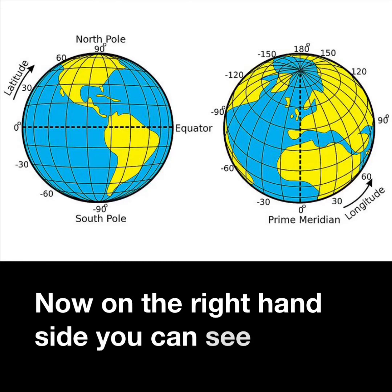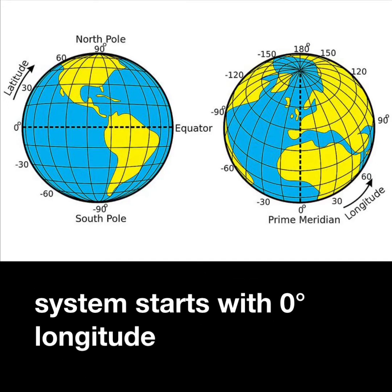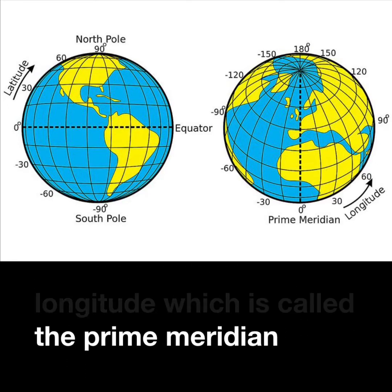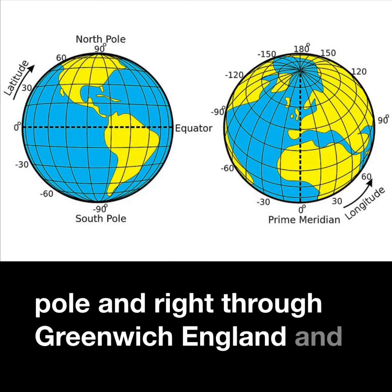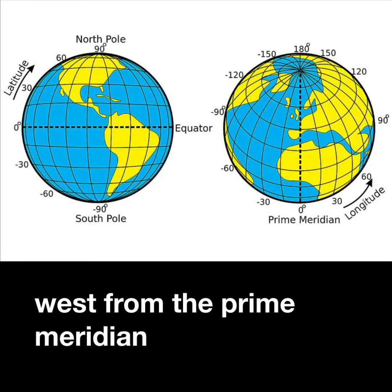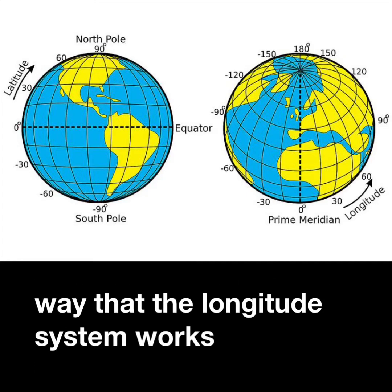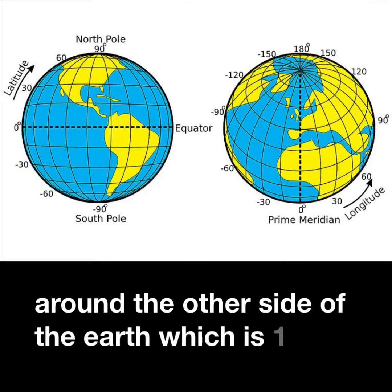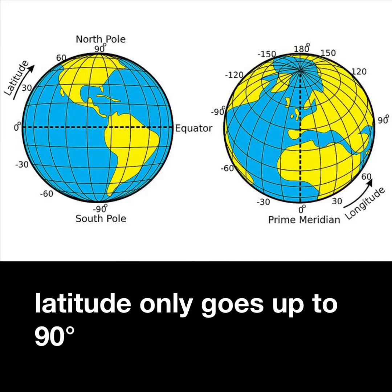On the right-hand side you can see the longitude system. It starts with zero degrees longitude, called the prime meridian, which runs from the north pole to the south pole right through Greenwich, England. From there we measure east or west — east is positive and west is negative. Longitude goes all the way around to 180 degrees, whereas latitude only goes up to 90 degrees.